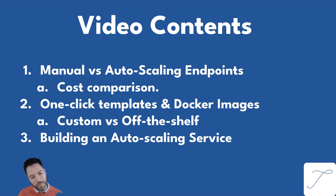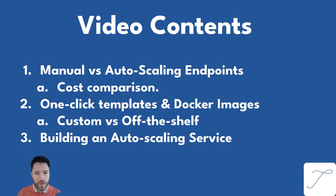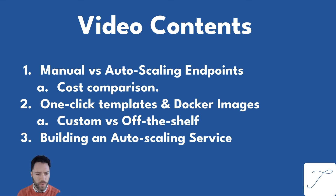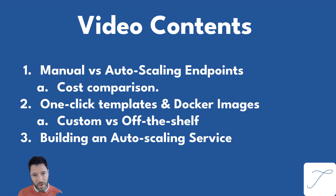For the agenda, there are three main parts to this video. I'll start by describing the different inference approaches — the manual approach where you rent a fixed number of GPUs versus an auto-scaling approach where you scale up and down how much you are renting — and look at the cost comparison and trade-offs. Then I'll describe how to set up one-click templates for running AI models and talk in detail about how to set up Docker images. Generally, there are off-the-shelf Docker images that provide the best performance, but if you have a custom model, in some cases these aren't available and you have to build your own. Then I'll walk through building an auto-scaling service.